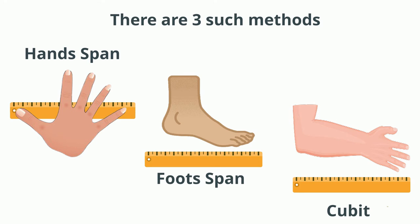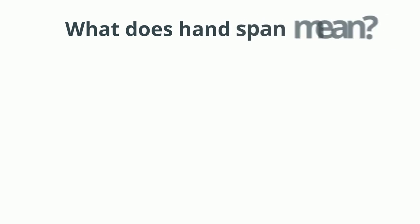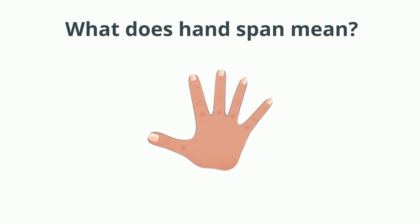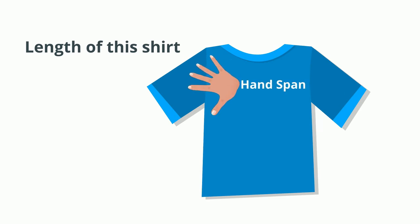What does hand span mean? When you keep your hand flat with fingers and thumb stretched out like this, the length from the tip of your thumb to the tip of your little finger in a straight line is known as hand span. Let's measure the length of this shirt using hand span: one, two, three, four, five. So the length of this shirt is five hand spans.